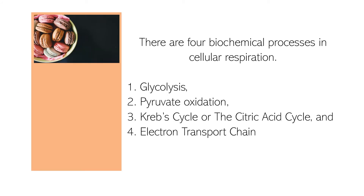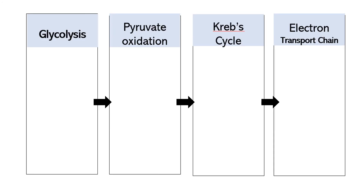Cellular respiration has four biochemical processes: glycolysis, pyruvate oxidation, Krebs cycle (or the citric acid cycle), and electron transport chain. These are the main biochemical processes — first glycolysis, then pyruvate oxidation, followed by Krebs cycle, and lastly the electron transport chain.